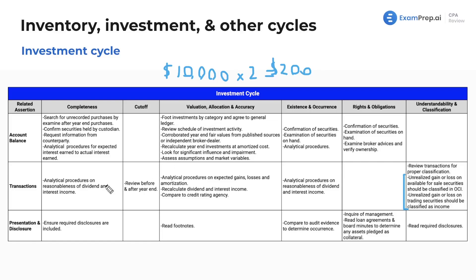For valuation, allocation, and accuracy related to buying and selling of stocks — this is the account balance tying in: at a point in time, this is what the stock is worth. For transactions, making sure the proper buying and selling, or receiving of dividend income and interest income, is proper. We want analytical procedures on expected gains, losses, and amortization. We want to recalculate dividend and interest income. And then compare it to a credit rating agency — Moody's and others — making sure investments are properly valued if we are receiving dividend income from a company. If they actually have an awful credit rating and may default or go out of business, that's something to take into account because maybe you shouldn't be valuing that stock as highly.